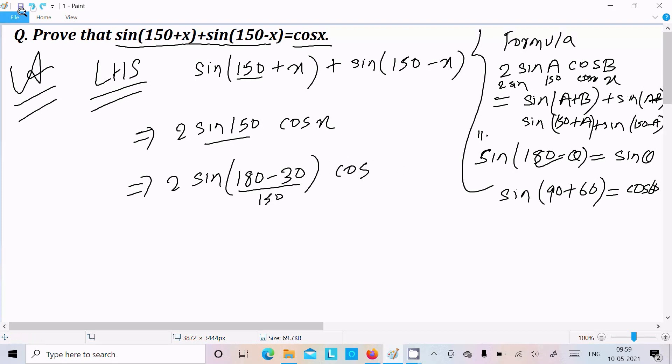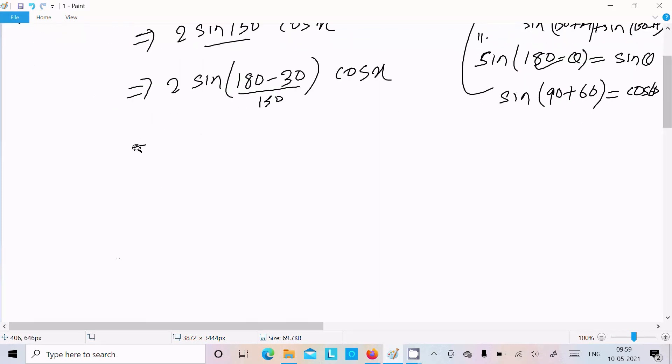Now thereafter write here cosx. Thereafter sin(180-θ) = sinθ, so 2sin30 we can write and cosx. So 2sin30 value is 1/2 into cosx, so it will cancel out one time, so here you can get cosx.